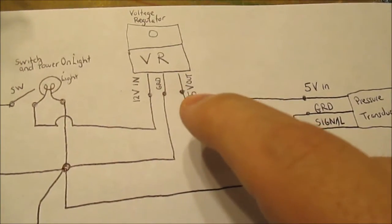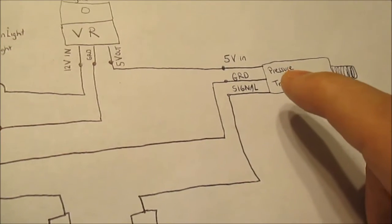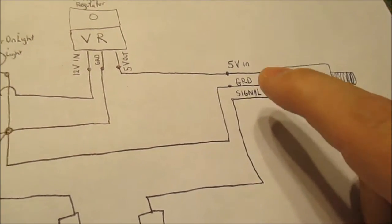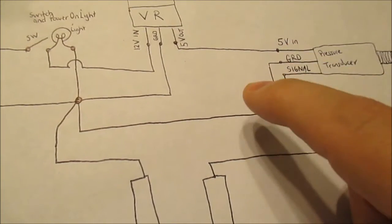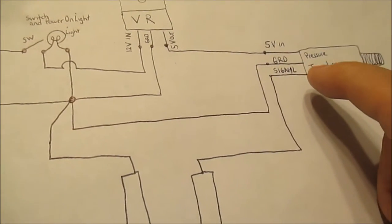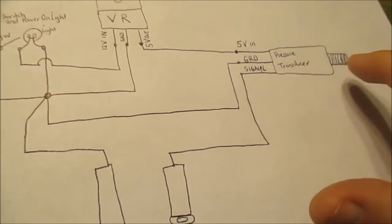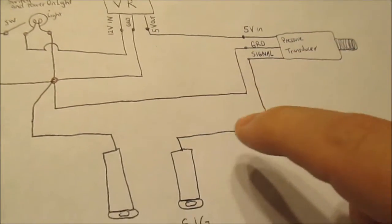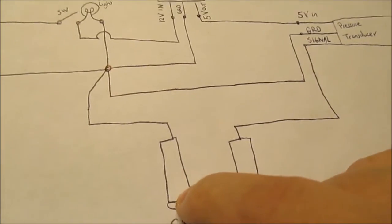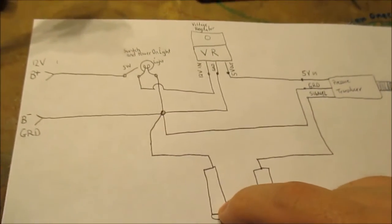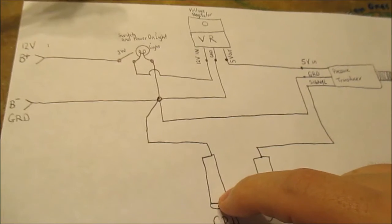5 volts out goes to my pressure transducer along with a ground. This will generate a signal based on pressure and send a signal out to my banana jack. Then there's my ground for my banana jack. So really it's a simple circuit.